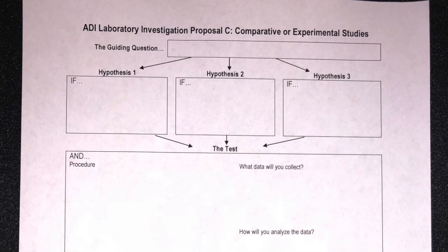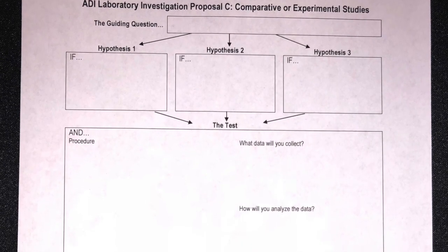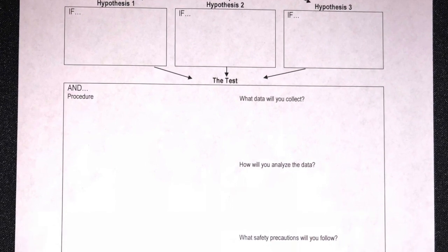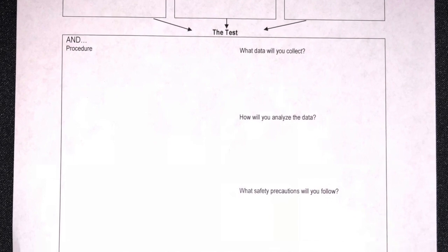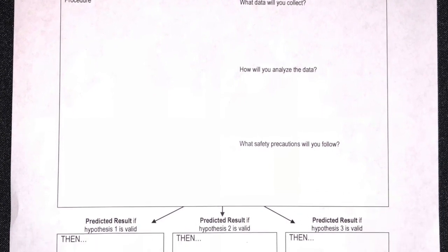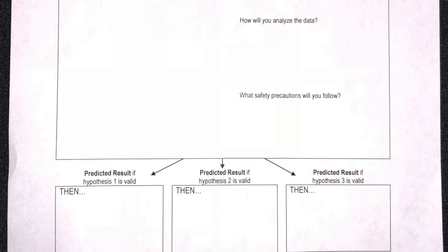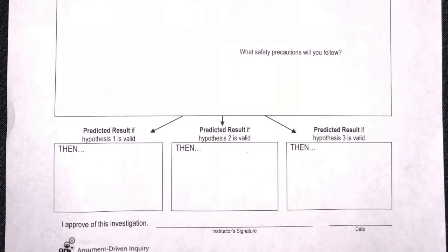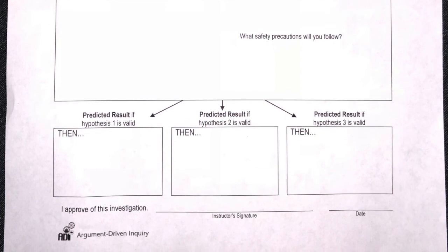At the top there's a place for the guiding question, followed by the three hypotheses or three possible answers to the guiding question. The students will then design a test, including the list of procedures, answering questions like what data will you collect and how you analyze the data. And then there's a place for their predicted results if the given hypothesis is found to be valid. At the bottom is a place for you to sign off and approve this investigation.